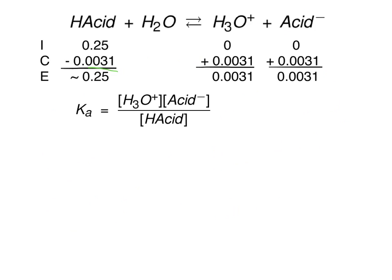Now all we've got to do is plug it in: 0.25 for H-acid, 0.0031 for H3O+, and 0.0031 for acid minus.